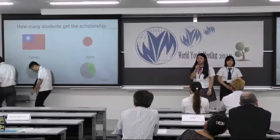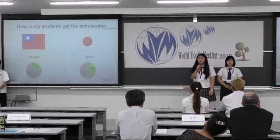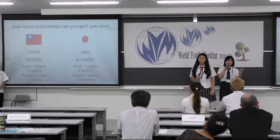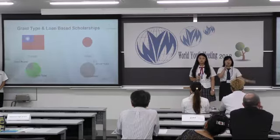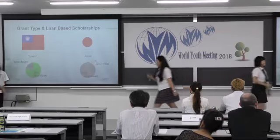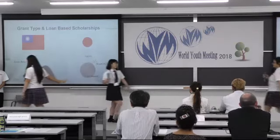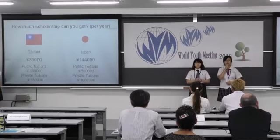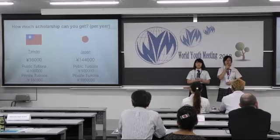How many students get a scholarship? In Taiwan, only 20% of university students get a scholarship. In Japan, 38% of students get them. In general, there are two types of scholarships: loan-based scholarships, which you need to pay back, and grant-type scholarships, which do not need to be paid back. In Taiwan, almost 79% of scholarships are grant-type. But in Japan, only 1% of scholarships are grant-type.